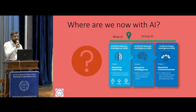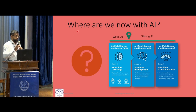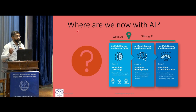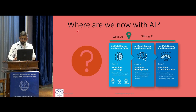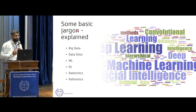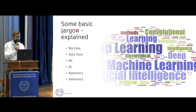Where are we now with AI? This is the AI evolution in comparison to a human brain. We are at the end of artificial narrow intelligence, and what we can achieve is machine consciousness — probably what you saw in the Terminator movie. We are not anywhere there. Before I go on to the questions, it is very important to tell fellow clinicians and people in healthcare some of the basic jargon we use in AI.